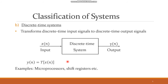The second classification is discrete time systems. These transform a discrete time input x(n) to a discrete time output y(n), that is y(n) = T{x(n)}. Examples of discrete time systems are microprocessors, shift registers, and semiconductor memories.